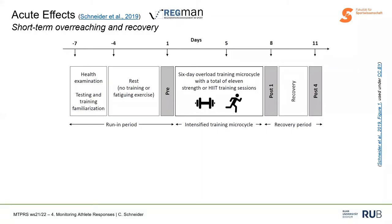I will now give a specific example of how we could evaluate acute effects when we look at short-term overreaching and recovery. I want to give an example from the Recovery Management project — the so-called Regman project — where lots of us at the training science and sports psychology departments worked in recent years. In the beginning of the project, we wanted to find measures able to display the level of fatigue due to short-term overreaching and also able to track short-term recovery responses. We did this in several studies.